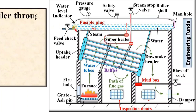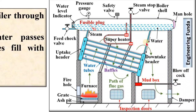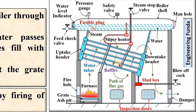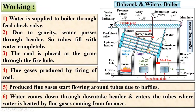Now, the working of the Babcock and Wilcox boiler. Water is supplied to the boiler through the feed check valve into the boiler shell. Due to gravity, water passes through the header and the tubes fill with water completely. Coal is placed at the grate through the fire hole, and flue gases are produced by the firing of the coal. These flue gases start flowing around the tubes due to the baffles. Water comes down through the downtake header and enters the tubes, where the water is heated by the flue gases coming from the furnace — heat is exchanged from the flue gases to the water.